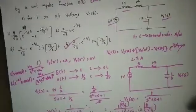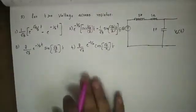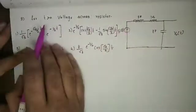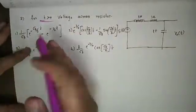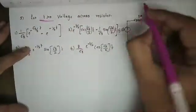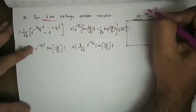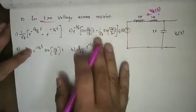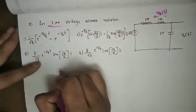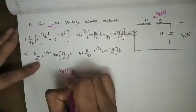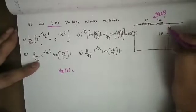Now for the next question — this is common data, so same figure. For t greater than 0, transient analysis again, but now we need the voltage across the resistor, Vr(t). The voltage across the resistor, with plus and minus terminals marked, is Vr(t).